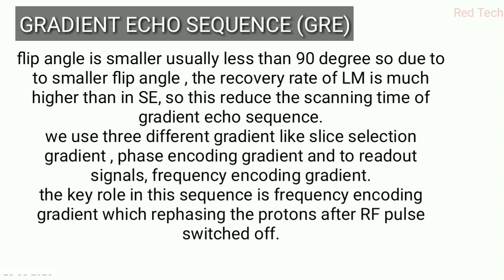This faster recovery helps in reducing the scan time, which is an advantage over Spin Echo. We use three different gradients: the slice selection gradient, the phase encoding gradient, and the frequency encoding gradient to read out signals. The frequency encoding gradient plays a vital role — it rephases the protons after the RF pulse is switched off. Remember: no 180-degree RF pulse is used in this sequence.